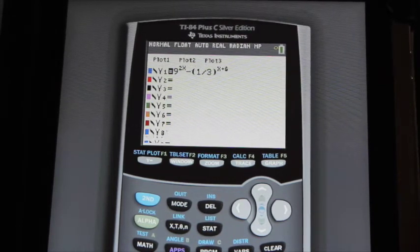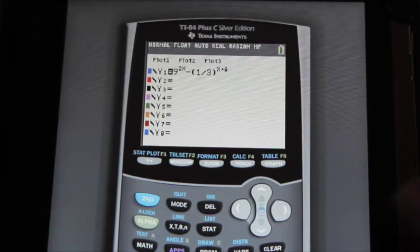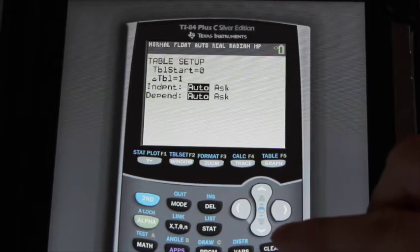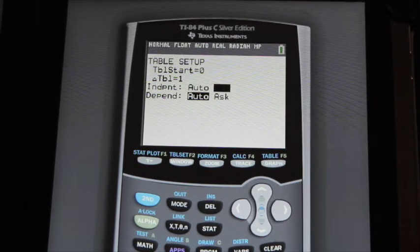Now, once that's entered, I could graph this, but I'm not going to. Graphing is always a good solution, though. What I'm going to do is go 2nd window to get into my table set menu, come down, and turn my independent from auto to ask.